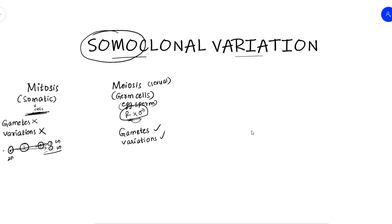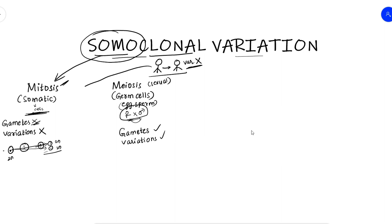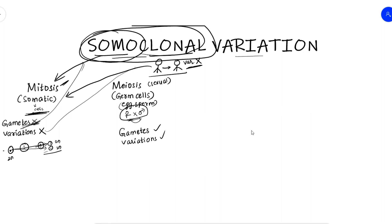Soma refers to a somatic cell, and this involves mitosis. In this case, we don't have gametes — we are working with plant body cells. This is like a human clone — it is a variation. This is a mitosis-based method, not involving gametes, not simply somatic — it is somaclonal variation. It is a common variation, and there is a chance of occurrence of variation, but we don't know the exact causes. If variation takes place, it is called somaclonal variation.